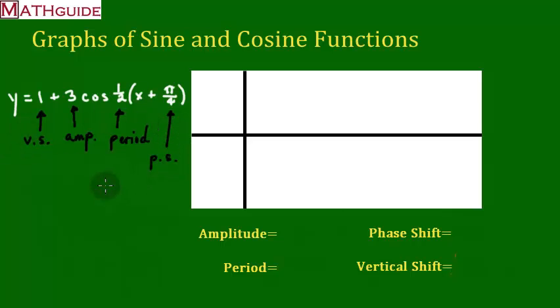Now let's run through all these to figure out how we're going to come up with the four characteristics. Let's start with amplitude. The absolute value of this three is our amplitude. So the absolute value of three is three.